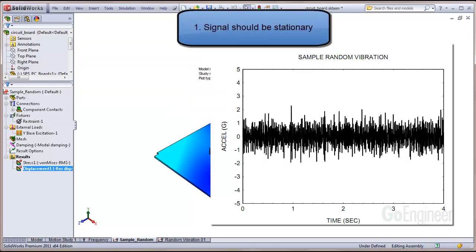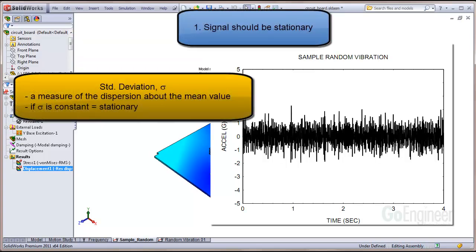The signal should be stationary. Another characteristic of a measured signal is its standard deviation. The standard deviation is a measure of the dispersion about the mean value. If the standard deviation is constant, then the signal is considered stationary.